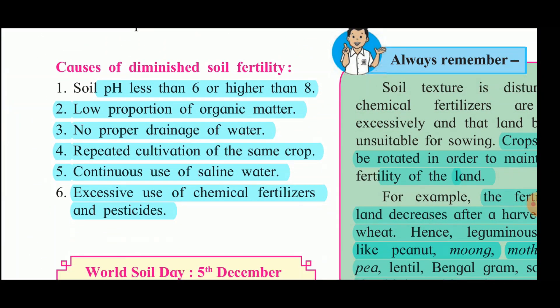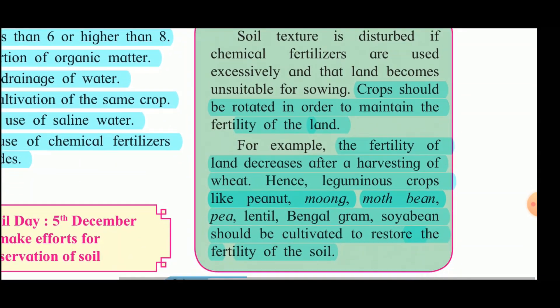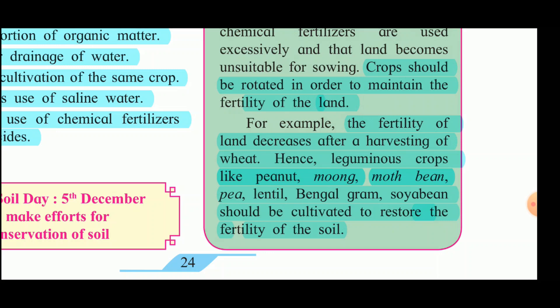Causes of diminished soil fertility include: soil pH less than 6 or higher than 8, low proportion of organic matter, no proper water drainage, repeated cultivation of the same crop, continuous use of saline water, and excessive use of chemical fertilizers and pesticides. Soil texture is disturbed by excessive use of chemical fertilizers, making land unsuitable for sowing. To maintain fertility, crops should be rotated — for example, after wheat harvest, leguminous crops such as peanut, moong, moth bean, pea, lentil, Bengal gram, or soya bean should be cultivated.